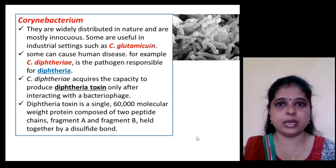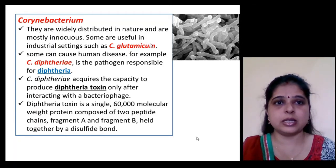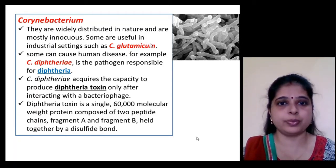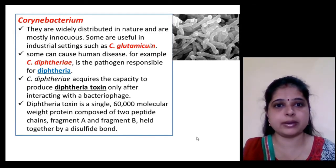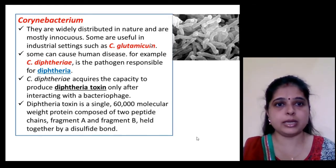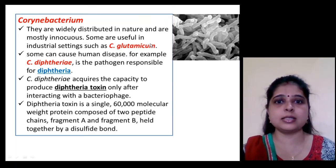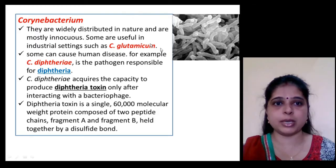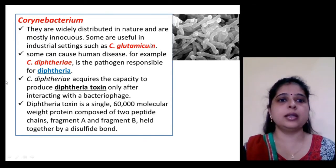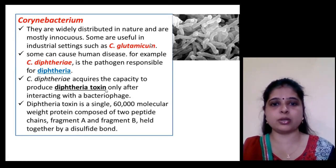Corynebacterium is widely distributed and useful in industrial settings — for example, Corynebacterium glutamicum is useful in industrial preparation. Corynebacterium diphtheriae is a pathogen responsible for diphtheria, and it acquires the capacity to produce diphtheria toxin only after interacting with a bacteriophage, which is a type of virus.